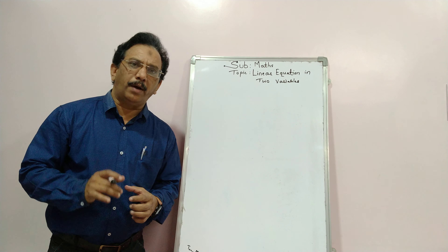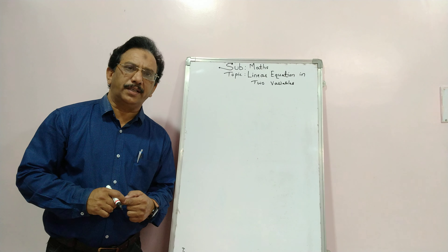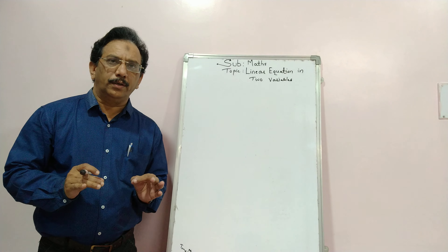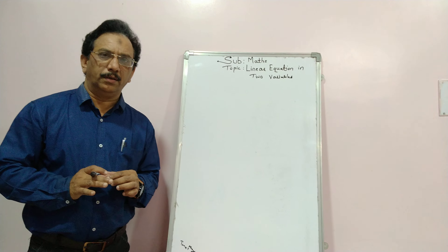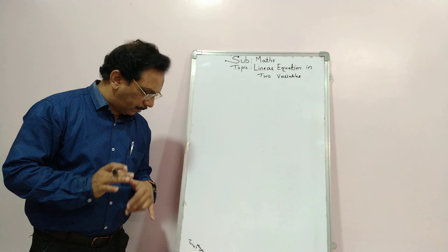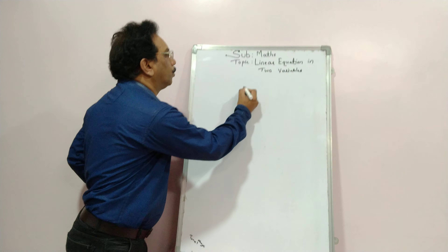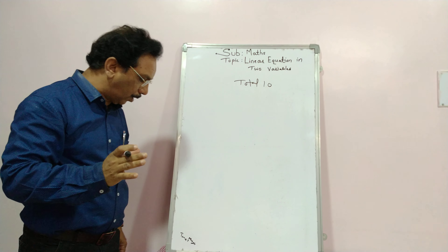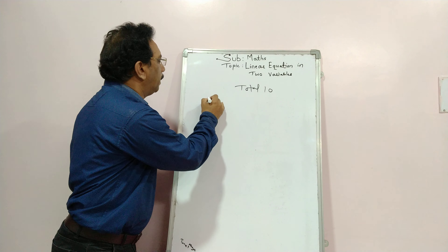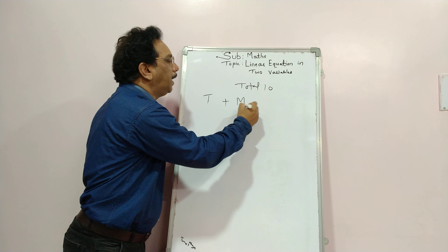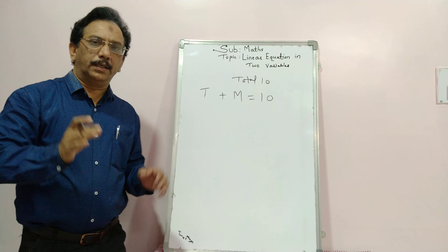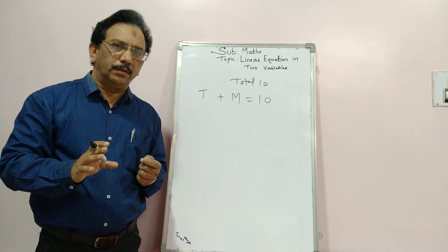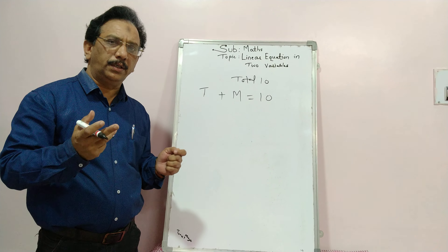Let us see what is meant by an equation. An equation is a statement of equality. For example, a plate carries a total of 10 vegetables — tomato and mango. So total is 10. I represent tomato by t and mango by m, so t plus m is equal to 10. It is a statement of equality, and it is called an equation. It carries two letters, so it is an equation in two variables.